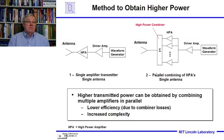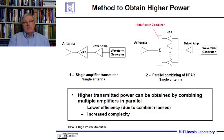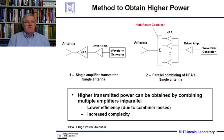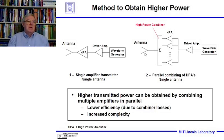But combining in parallel comes with efficiency problems — there are losses in the high power combiner — and increased complexity. If one of the high power amplifiers has a problem, there can be imbalances, causing reflection signals that require compensation circuits. Many systems do effectively use this technique, but these are the downsides of putting amplifiers in parallel rather than in series.